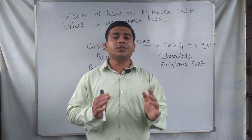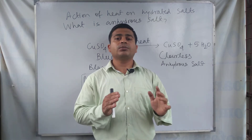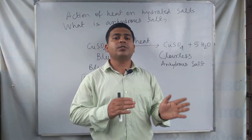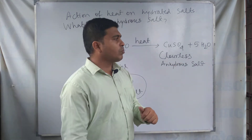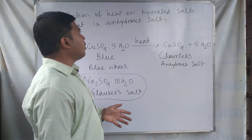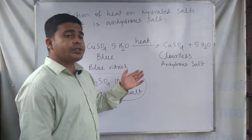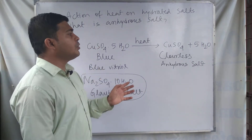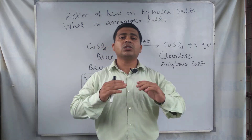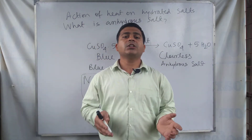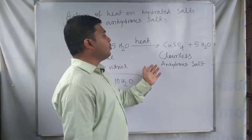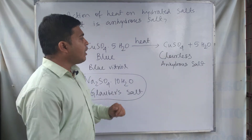On heating, the crystalline shape of the hydrated salt changes. For some colored salts, the shape of the crystal changes due to heating. For example, a colored salt like blue vitriol loses its color on heating. The colored salt becomes colorless on heating. For example, copper sulphate·5H₂O, which is called blue vitriol, on heating forms a colorless anhydrous salt called anhydrous copper sulphate, which has no color.